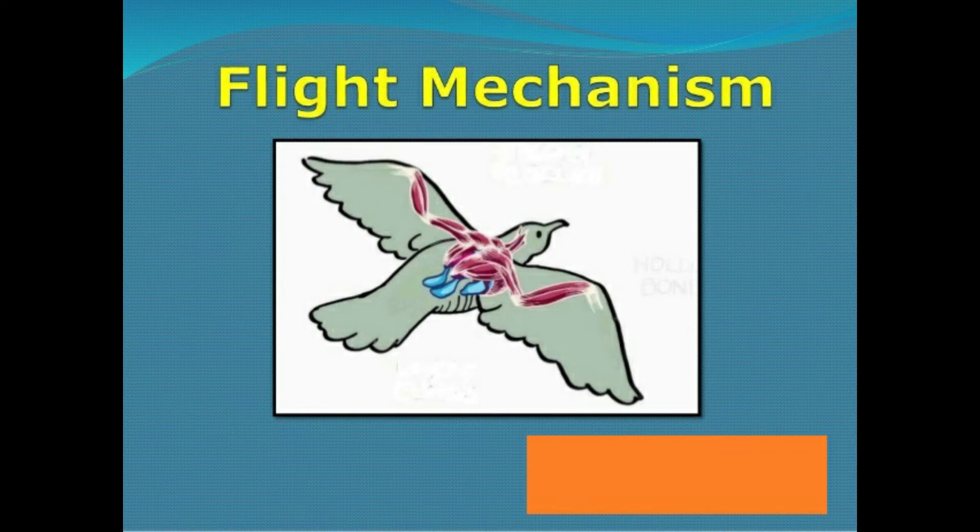The body is streamlined to cut cleanly through the air. The feathers lie smoothly against the body so that air can easily flow over them.